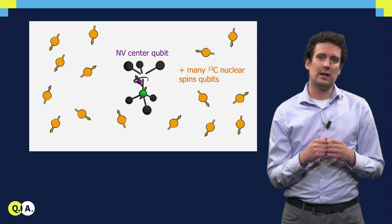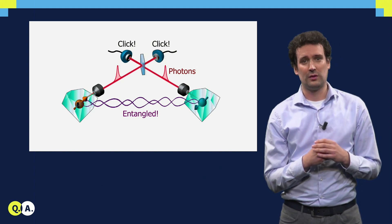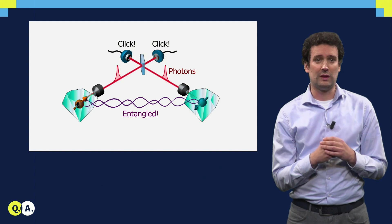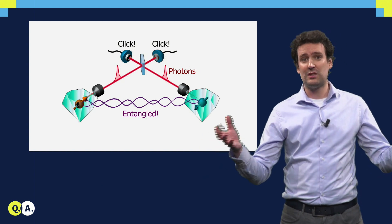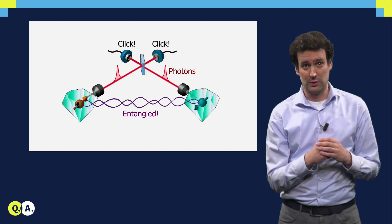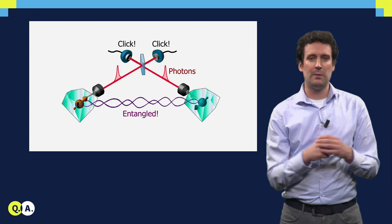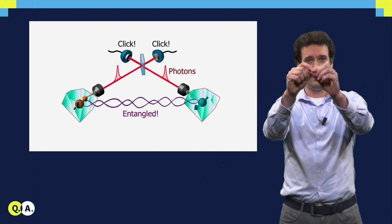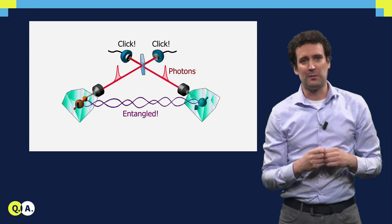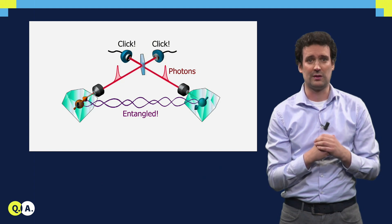So how do we link these NV centers together into a network? For that we use photons. Consider two NV centers in two different diamonds. We first make each of these NV centers emit a photon that is entangled with the spin state. And then we take these two photons and we bring them together on a beam splitter. And after this beam splitter, it is fundamentally impossible to tell which photon came from which NV center.